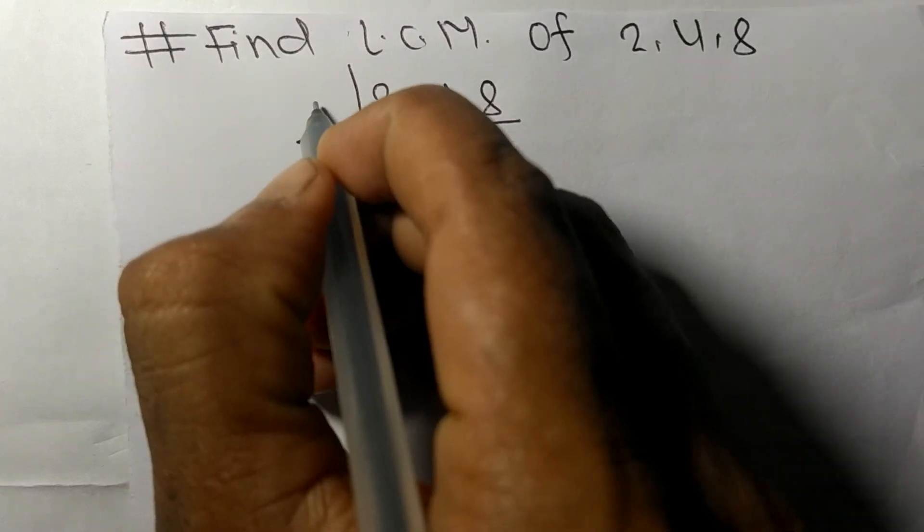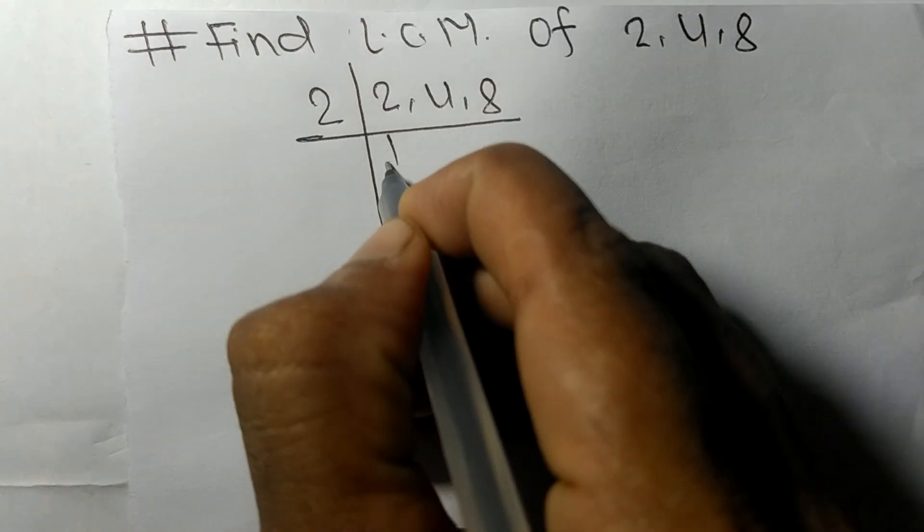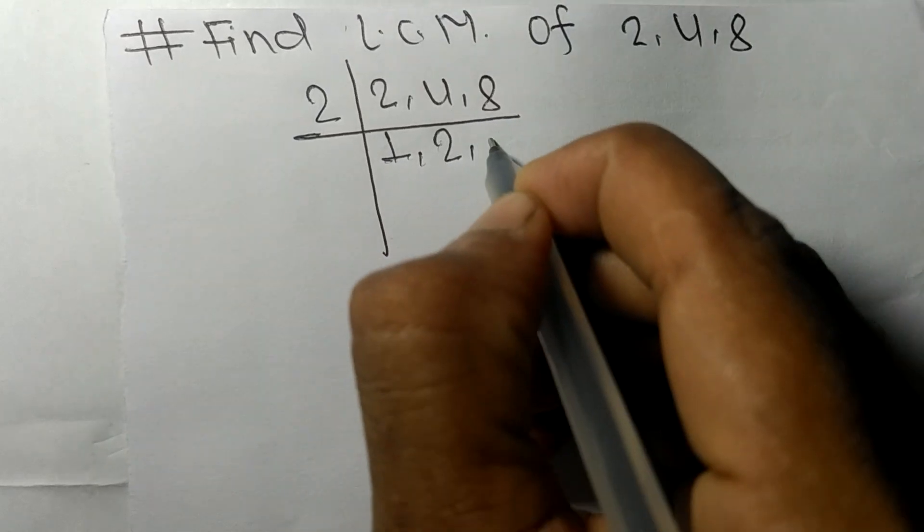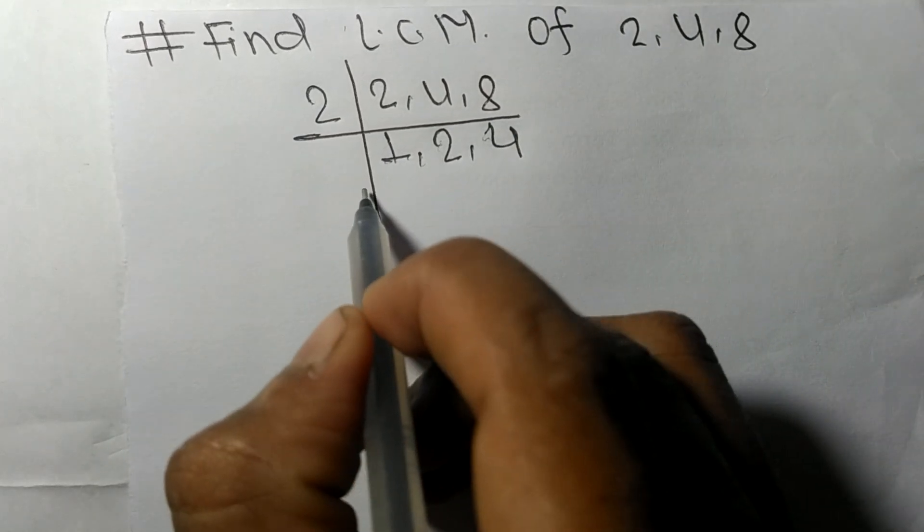It is divisible by 2: 2 times 1 means 2, 2 times 2 means 4, and 2 times 4 means 8.